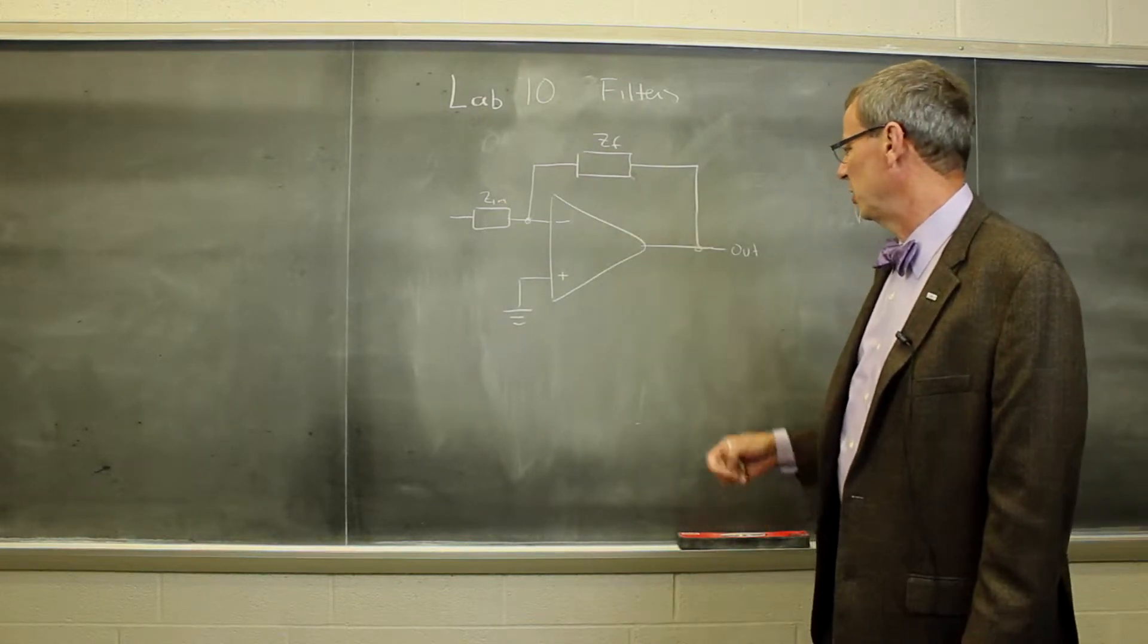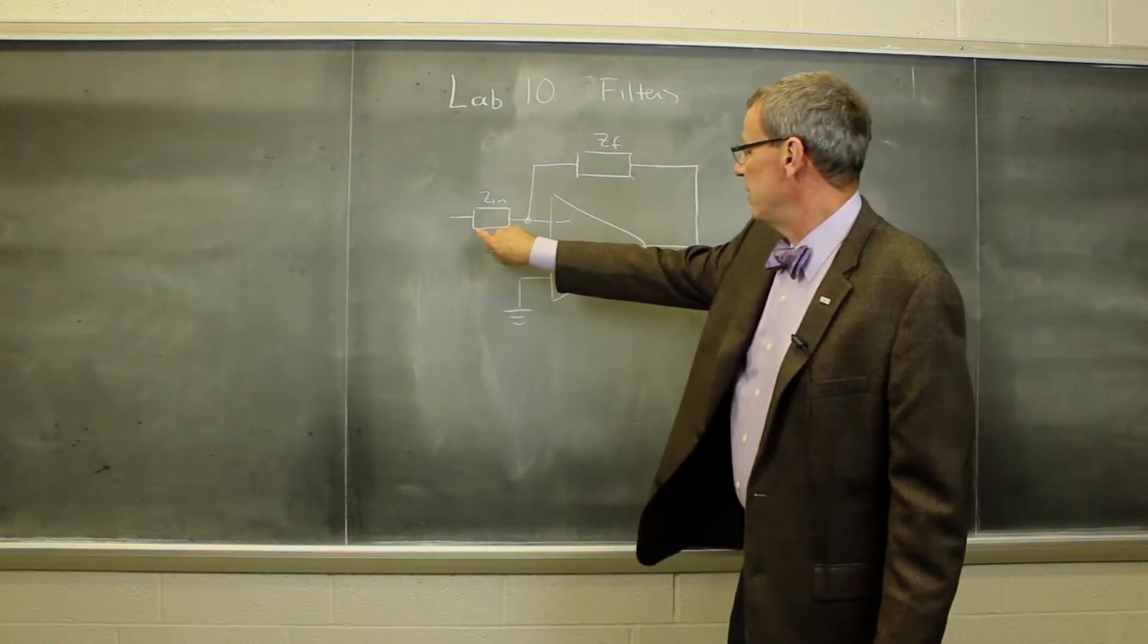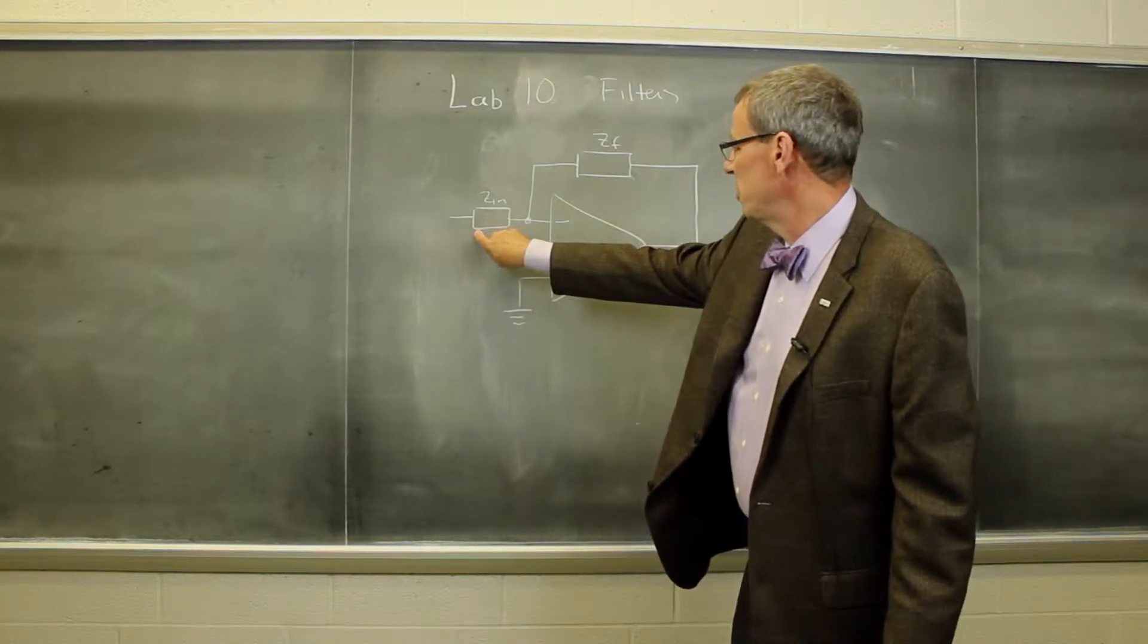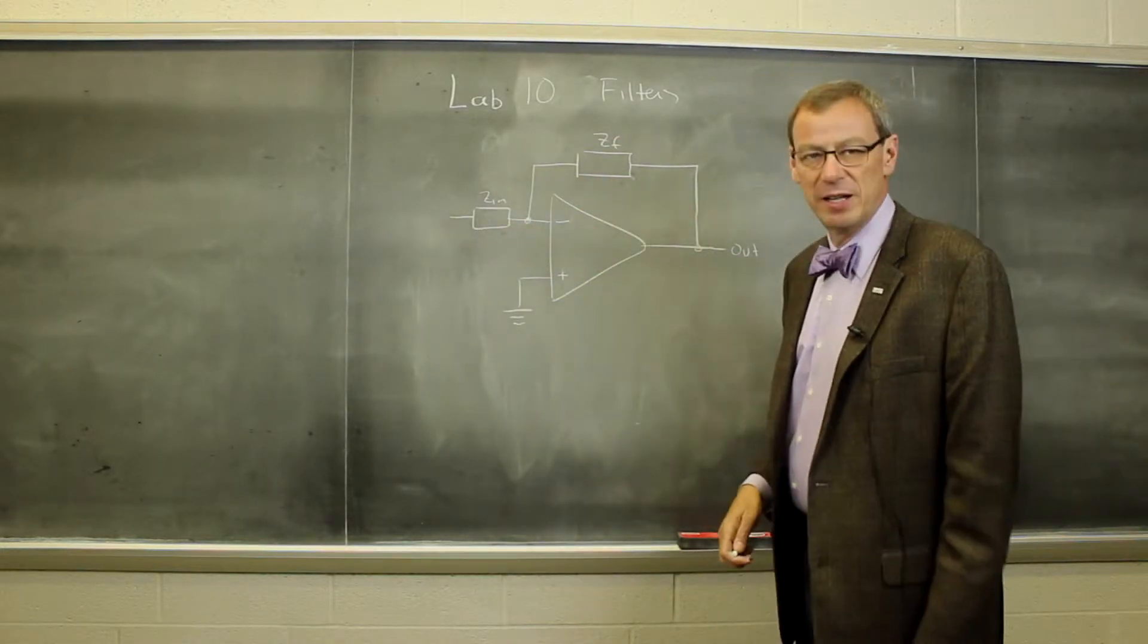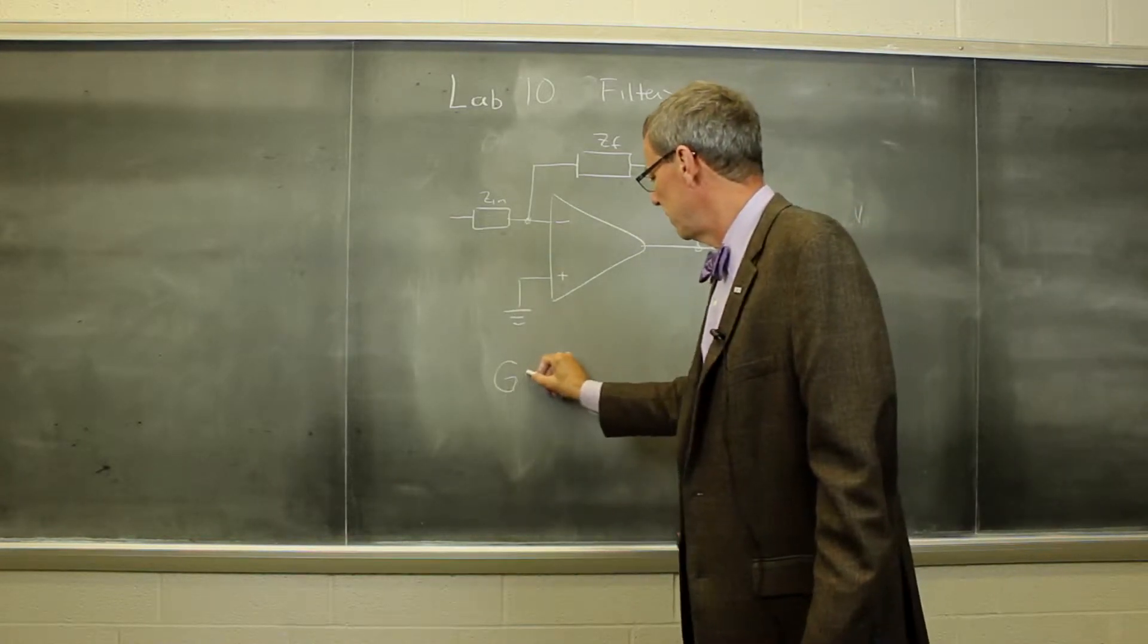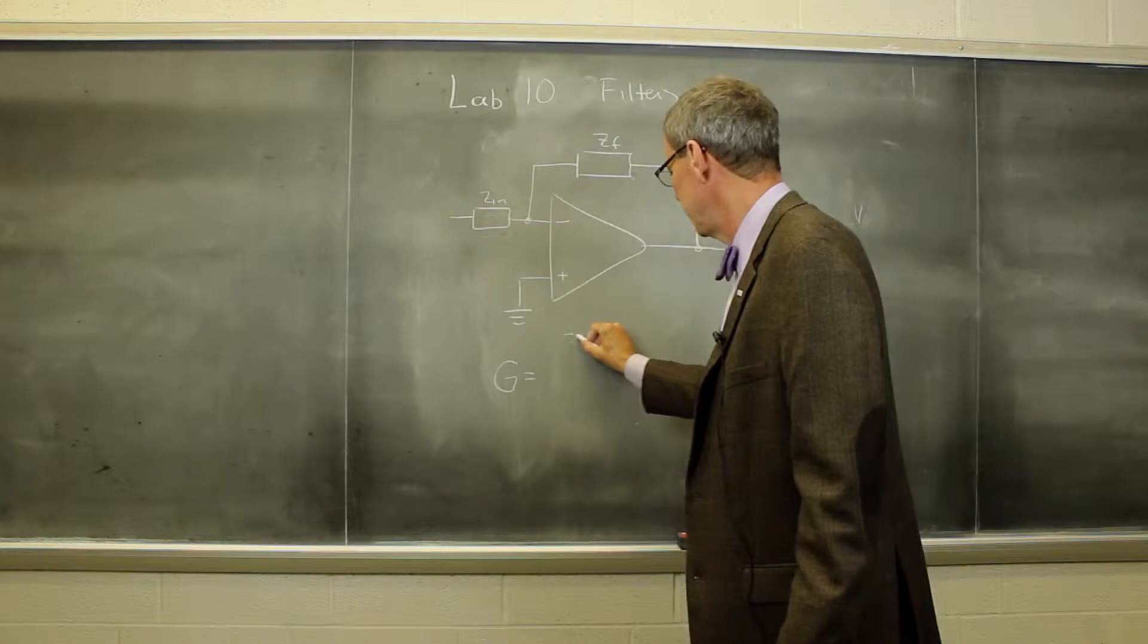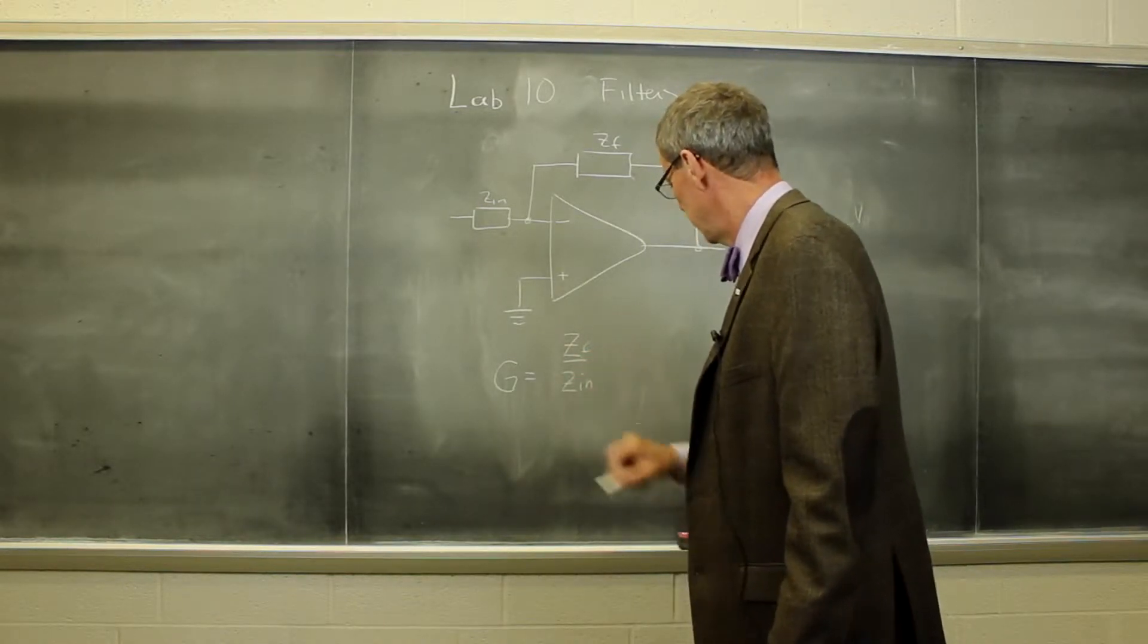So the basic filter circuit we're going to look at here has the op amp, the non-inverting input is grounded, the inverting input comes in through some input impedance, and there's a feedback impedance given here that connects the output to the inverting input. And the gain function, which is basically our filter function, is given by ZF over ZN.